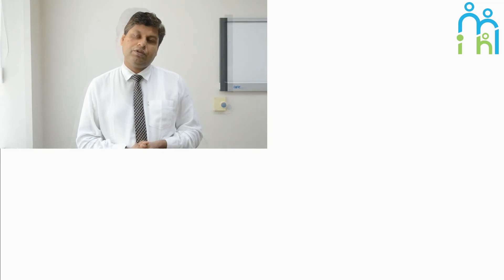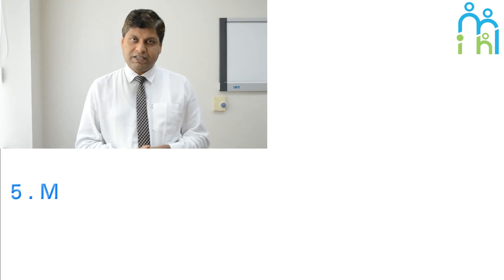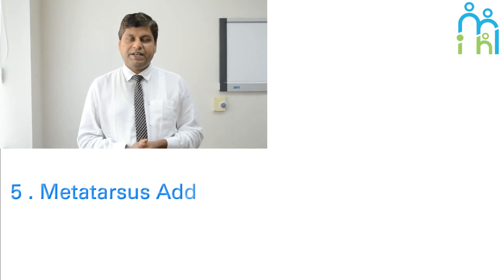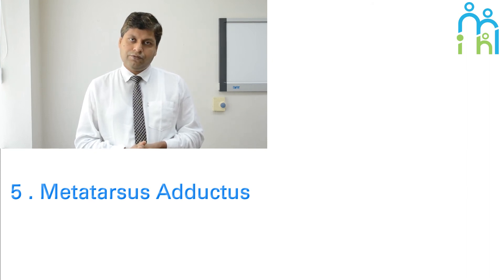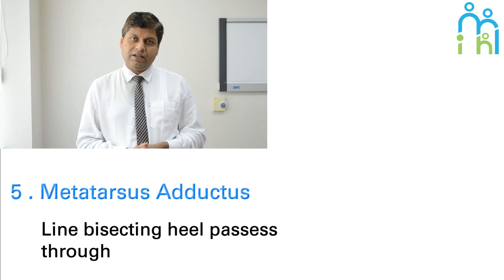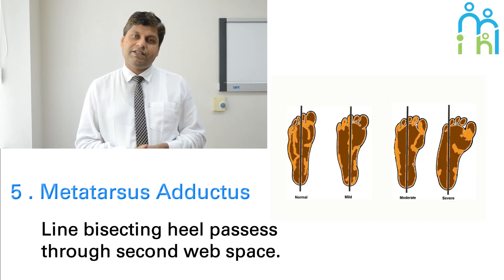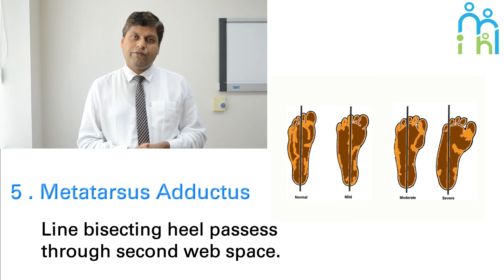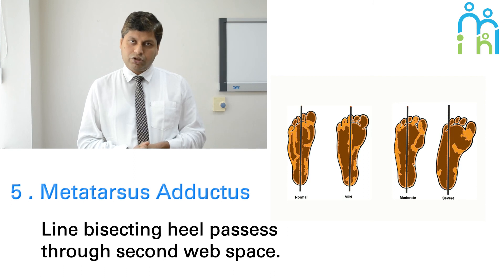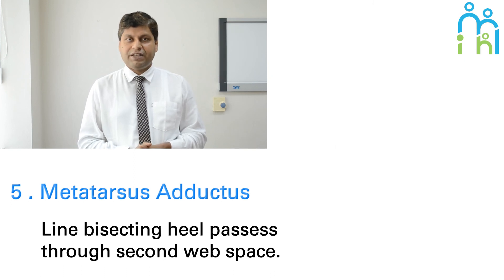Now we check metatarsus adductus. In a normal foot, the line bisecting the ankle should come through the first web space. But in the case of metatarsus adductus, it deviates away from the first or second web space. We draw that line and check whether the patient has metatarsus adductus or not.